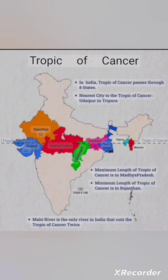The Mahi River is the only river in India that cuts the Tropic of Cancer twice — first in Madhya Pradesh, and the second time in Gujarat.